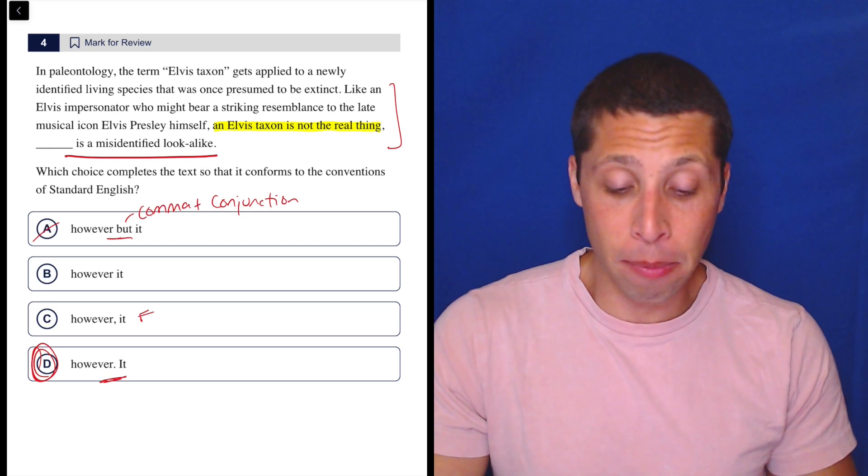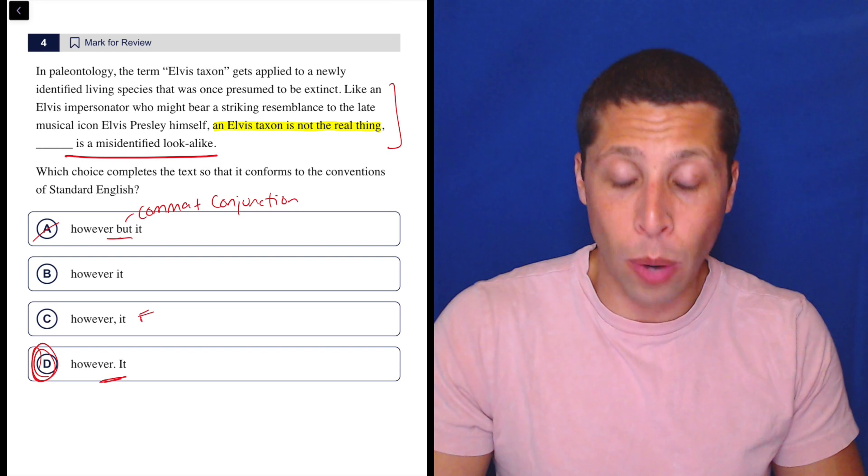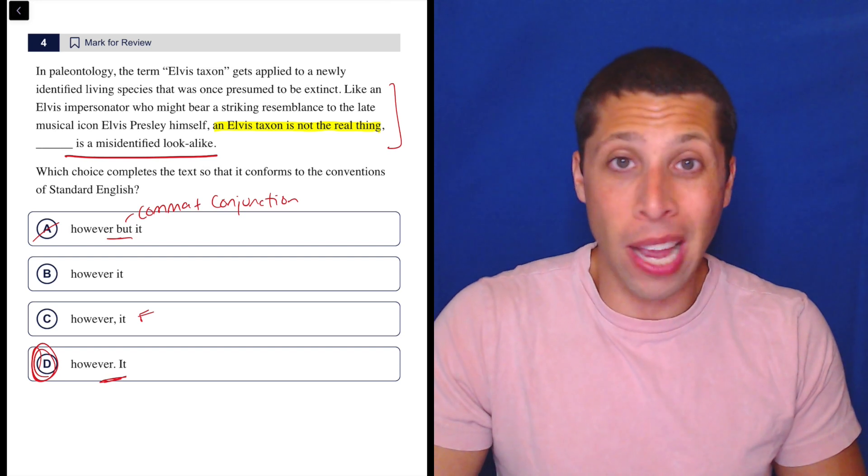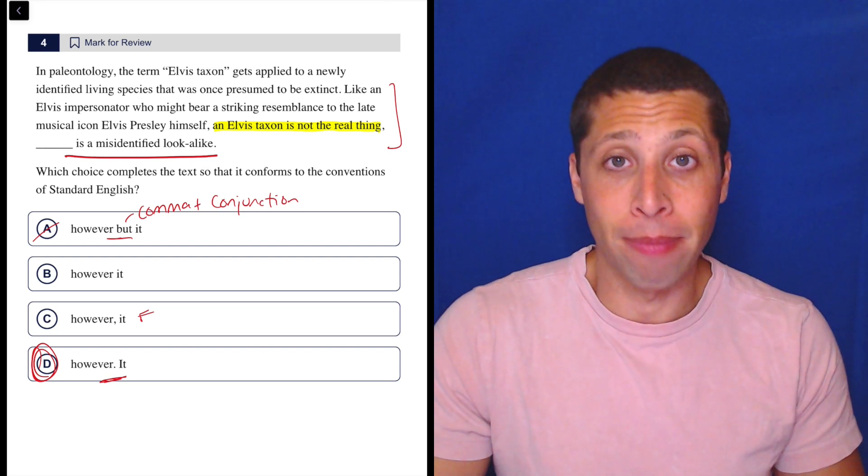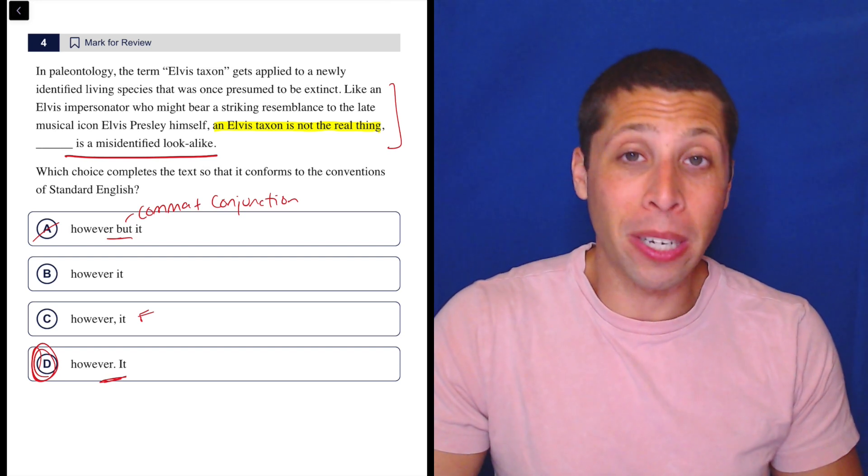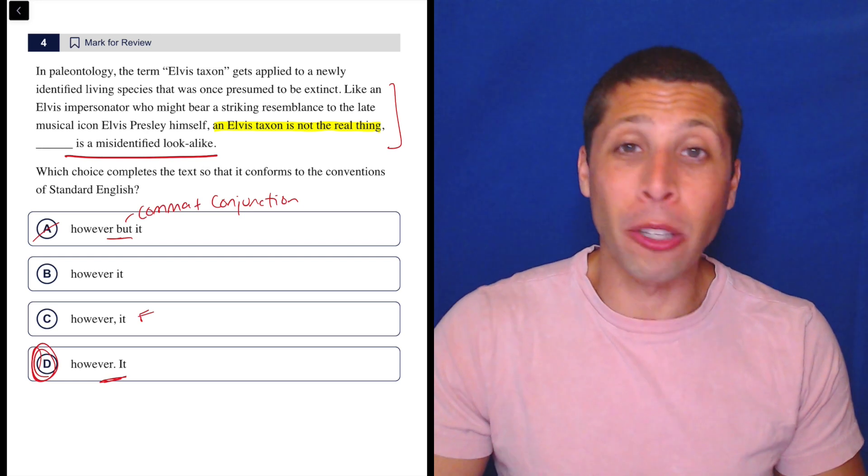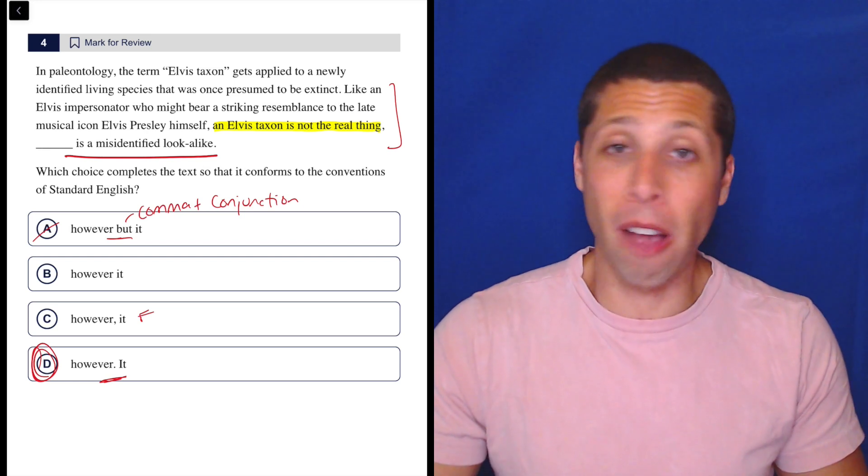But that's it. However, it really doesn't matter. It's still kind of a connector placement question. But mostly we had no choice. We had to pick D because we needed a period. And sometimes that's really what it comes down to. So if you see a period, you see a semicolon, those are probably the choices you want to check first because they might solve the whole thing.